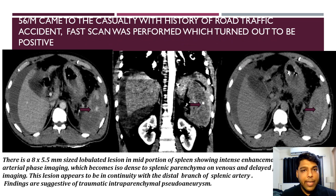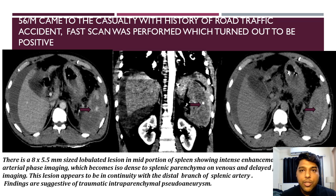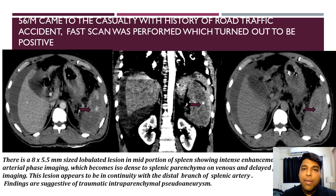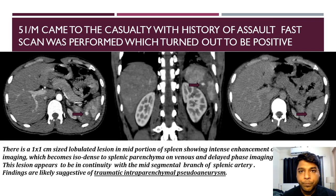Case 3: A 56-year-old male came to casualty with history of road traffic accident. FAST scan was performed which turned out to be positive. There is an 8x5 mm sized lobulated lesion noted in the mid portion of the spleen, showing intense enhancement on arterial phase imaging. It tends to appear isodense to the splenic parenchyma on delayed phase imaging. The lesion appears to be in continuity with a distal branch of the splenic artery, findings likely suggestive of traumatic intra-parenchymal pseudoaneurysm.